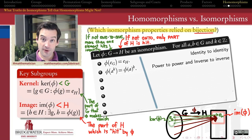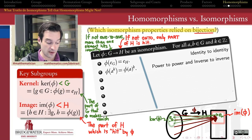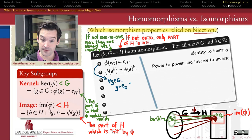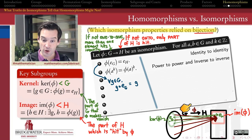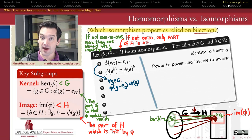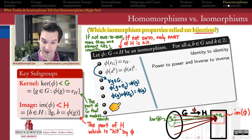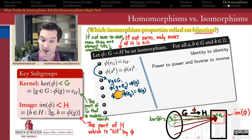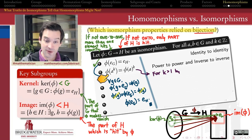First, we knew that every isomorphism sends the identity element to the identity element. Is that still true for homomorphisms? For any g in the domain group, g multiplied by the identity of G gives g itself. Applying phi to both sides and using only the homomorphism property — the product rule — lets us split the left-hand side into phi of g times phi of the identity. By the cancellation property that exists in every group, we can cancel phi of g on both sides, finding that phi of the identity equals the identity. Therefore, every homomorphism sends the identity to the identity.